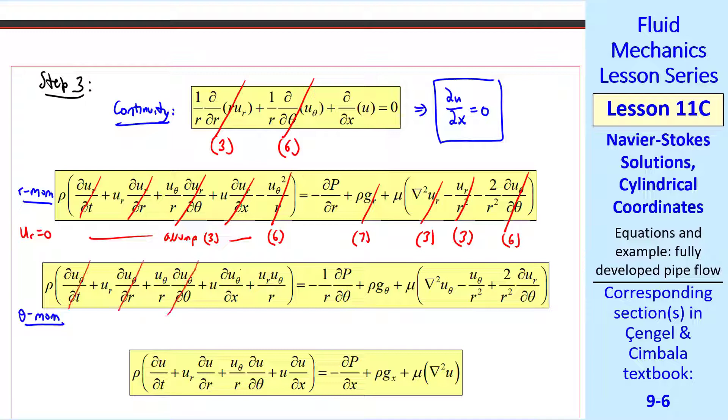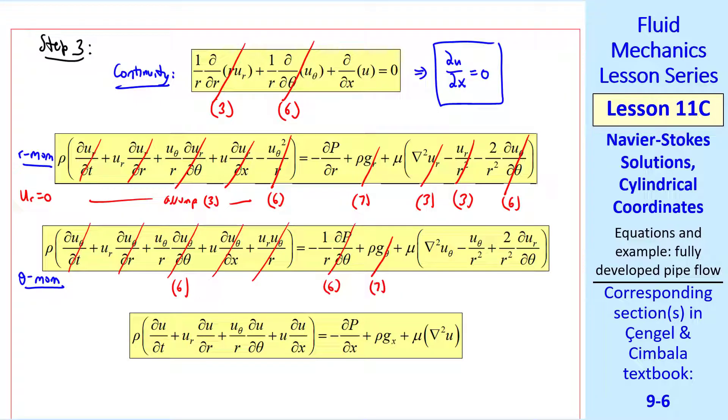Now consider theta momentum. These terms all go away because of assumption six. Nothing is a function of theta. We're ignoring gravity. uθ is zero. And ∂/∂θ of anything is zero.